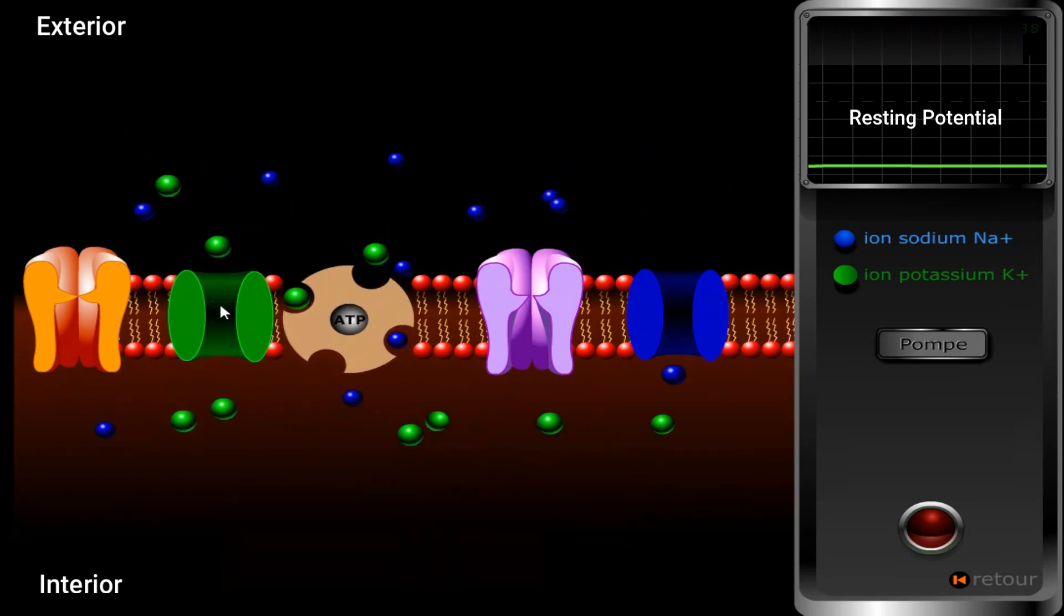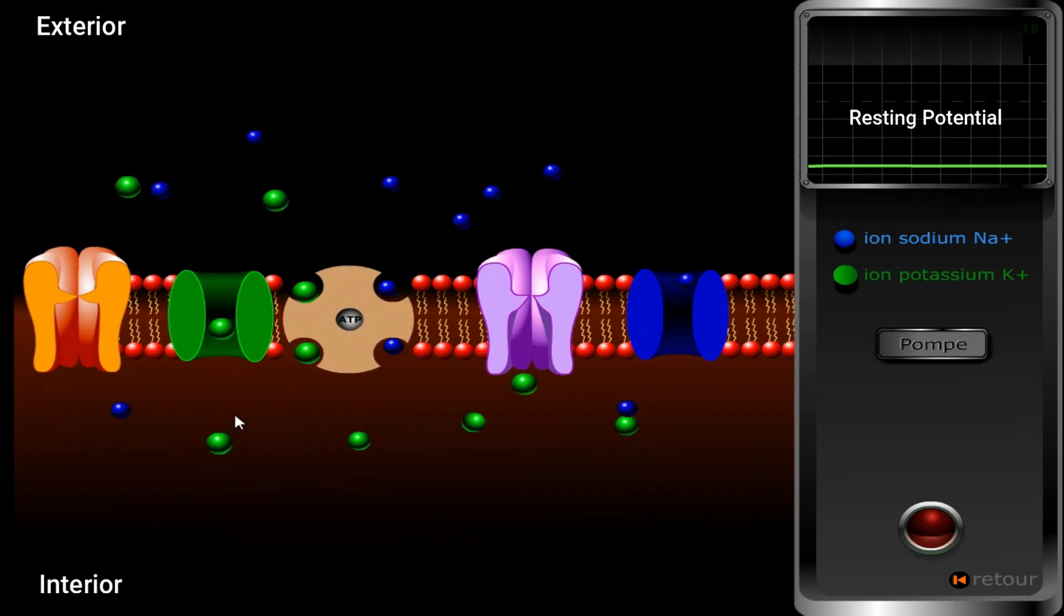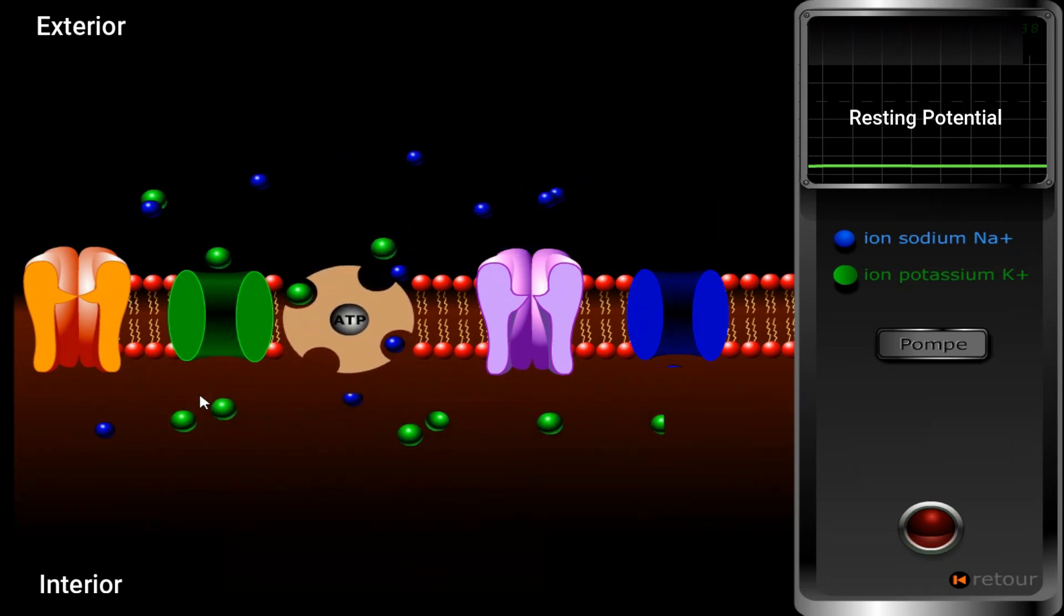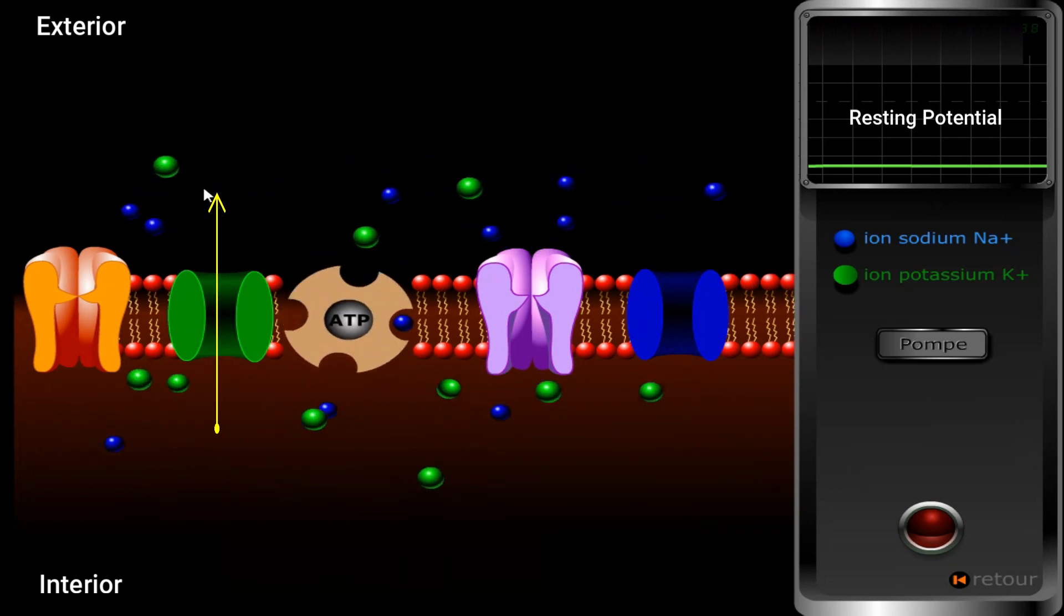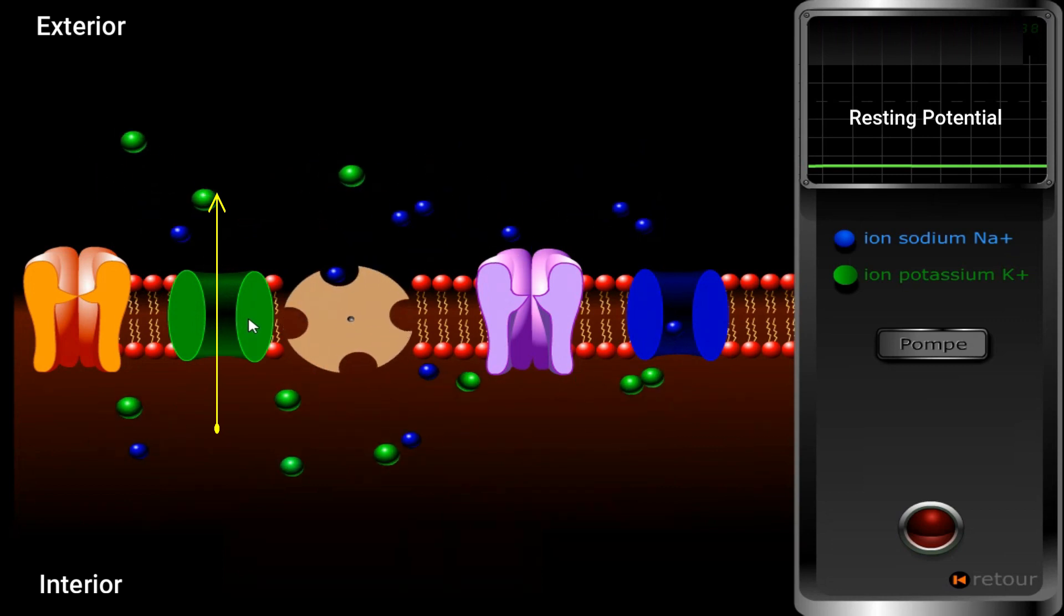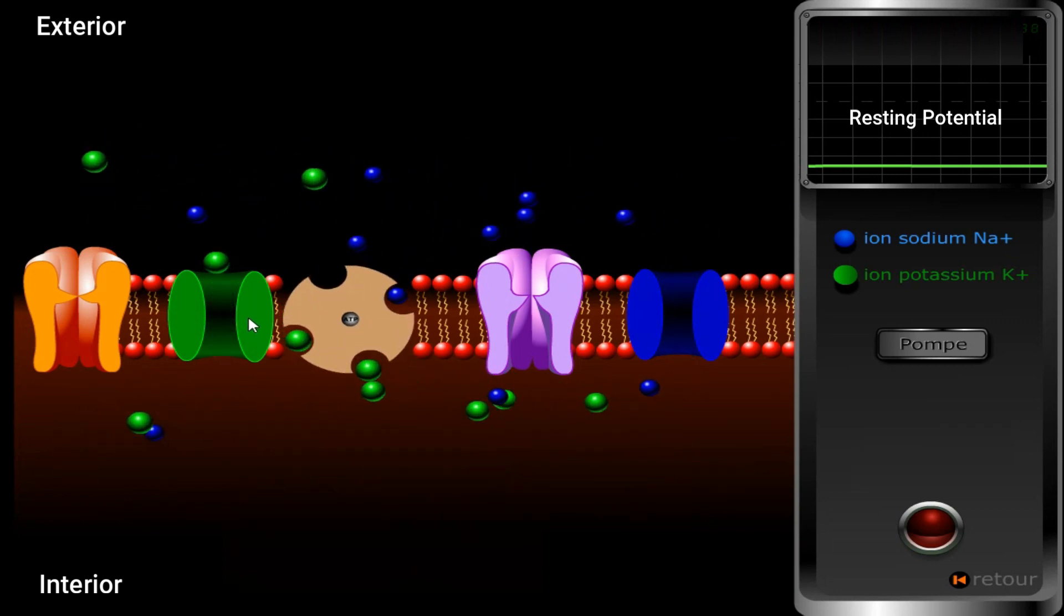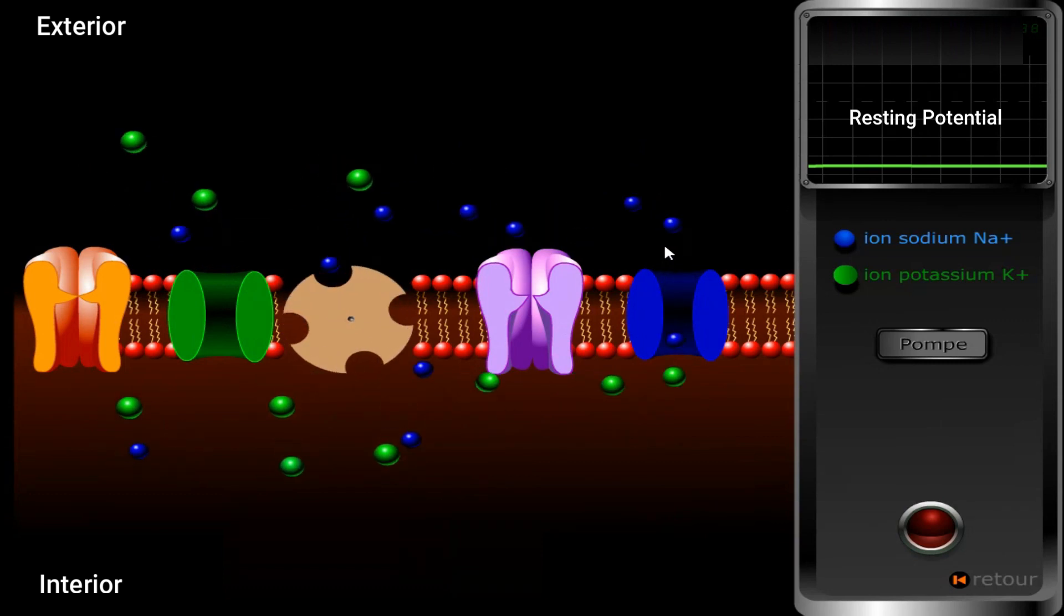While the K+ which are represented in green here diffuse from interior medium to exterior medium through the K+ non-voltage dependent channels. Why is this diffusion done in this manner?